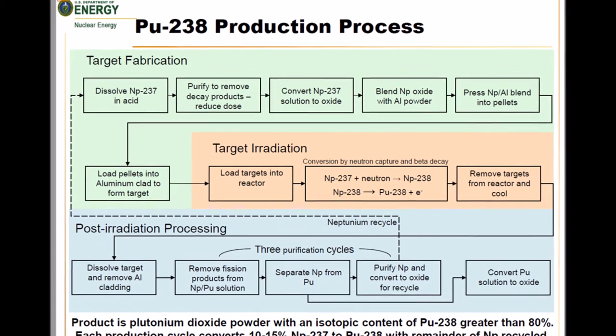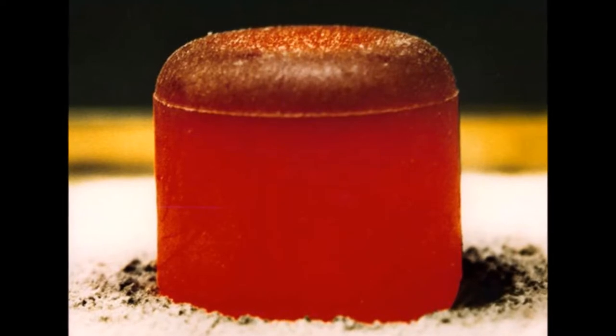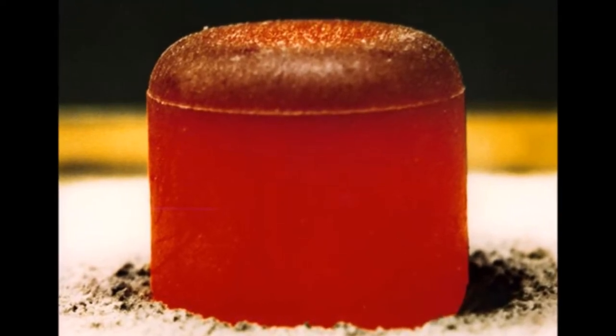Once production wraps up, the plan is to eventually produce 3.3 pounds of plutonium-238 every year. Pretty amazing, huh?